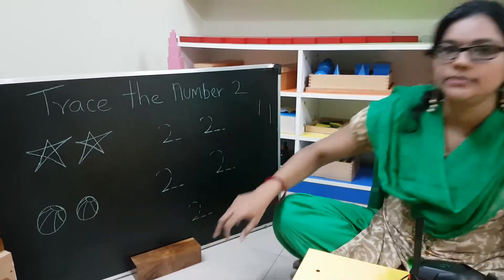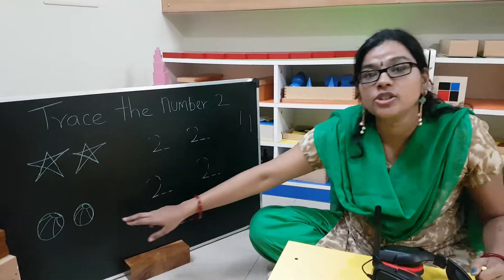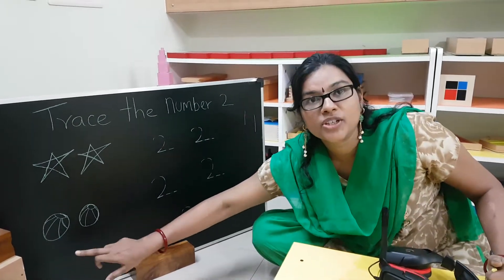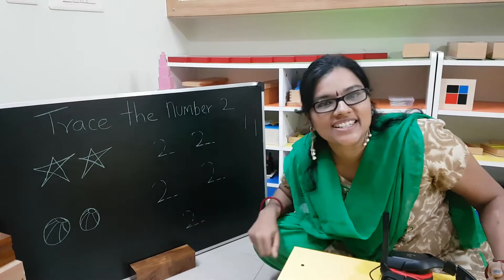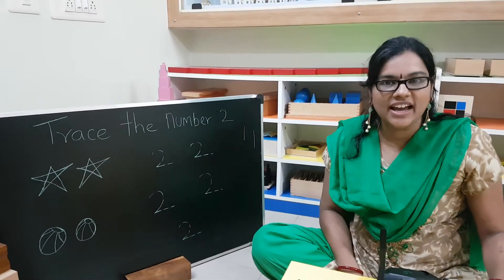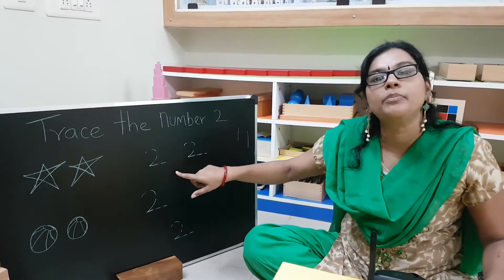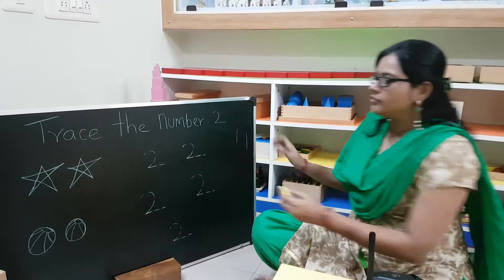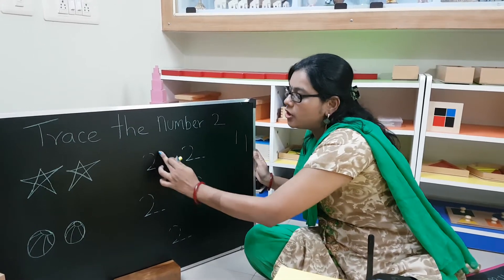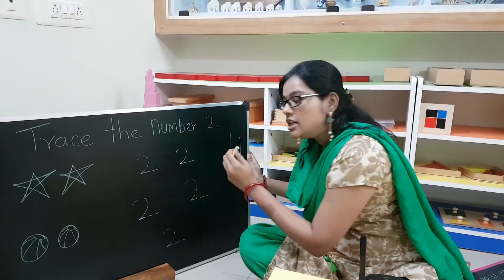Then, you have balls here. How many balls do you have? 1, 2. There are 2 balls. Now we will trace and write the number 2. Starting from here, without taking your hands, you are going to trace the number 2.